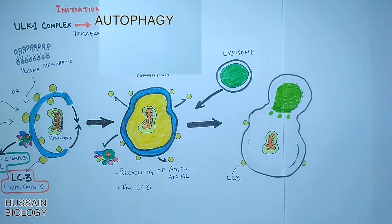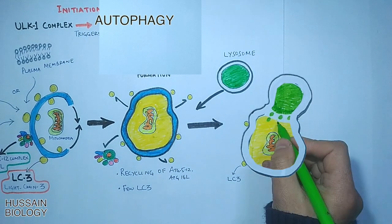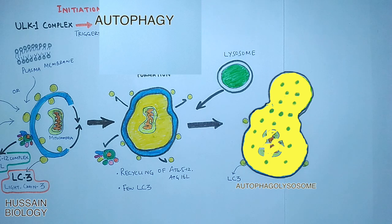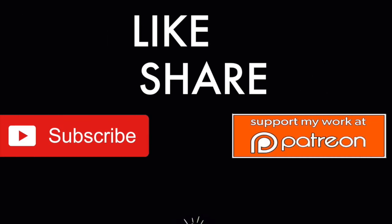The lysosome releases all its hydrolytic components to degrade the cargo in the autophagolysosome, which concludes the autophagy pathway. It must be noted that the autophagolysosome is a single membrane structure, whereas the autophagosome is a double membrane structure.